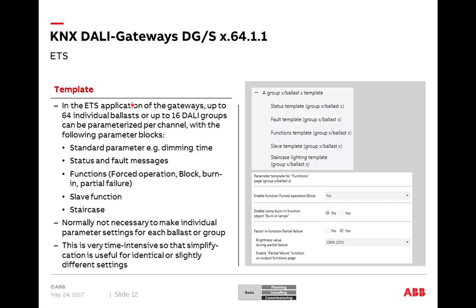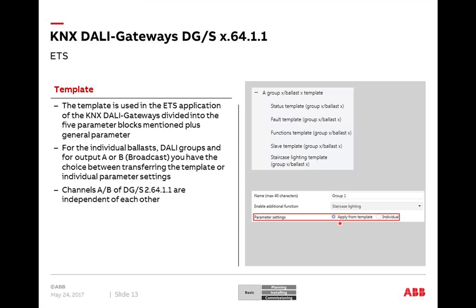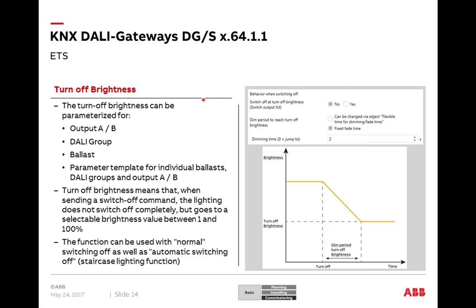In the ETS you can choose for each group whether to take parameters from the template or use individual parameterization — for each of six parameter blocks. For the two-fold device, templates are independent for each channel, so you create a template for channel A and optionally another for channel B — channel-wise templates. A very useful feature for these powerful DALI gateways with many possible DALI groups or ballasts.